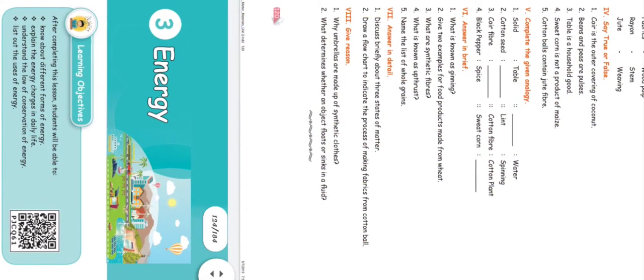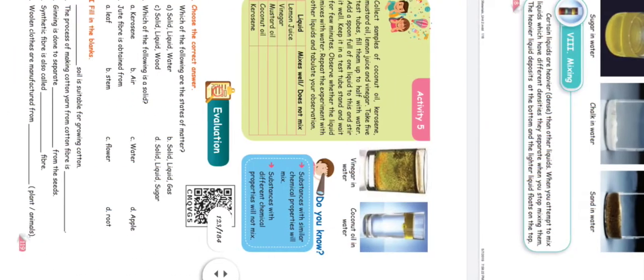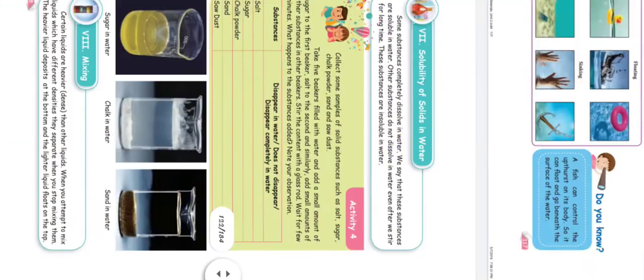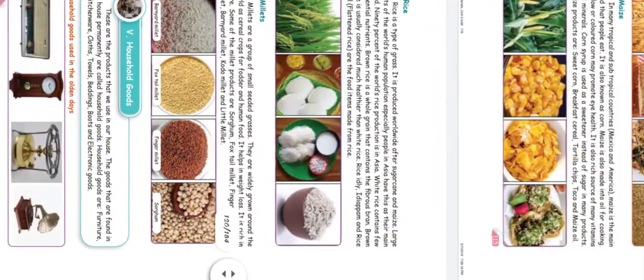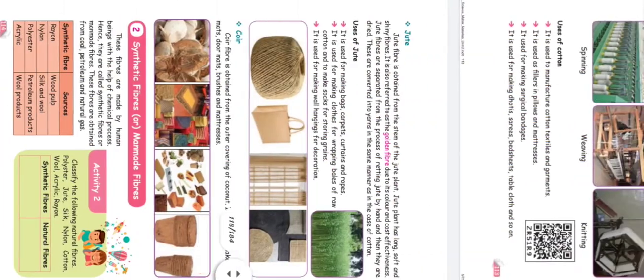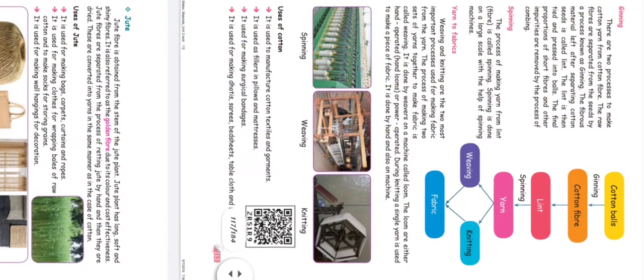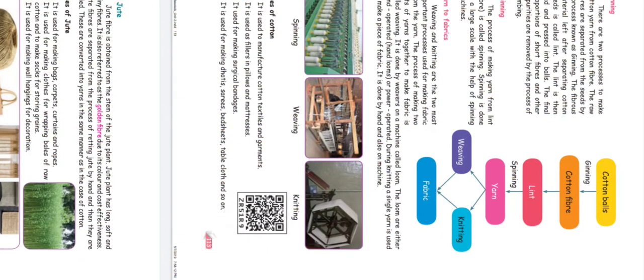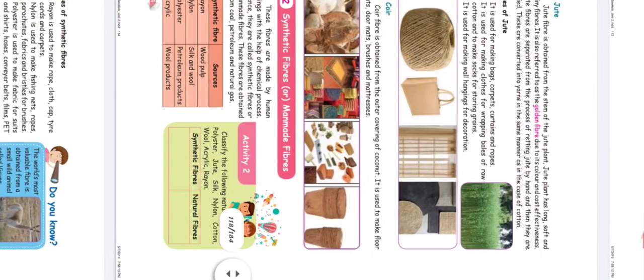Draw a flow chart to indicate the process of making fabrics from a cotton ball. The flow chart is on page 113, right-hand side: cotton ball → cotton fiber → lint → yarn → weaving / knitting → fabric. You will mention the complete flow chart as the answer.